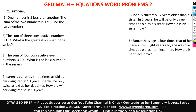Going to the questions now. Number one says: one number is five less than another. The sum of the two numbers is 171. Find the two numbers. Let's make the first number X. One number is equal to five less than another — let the other be Y. Five less than Y means Y minus five. When you see 'less than,' Y comes first, then you subtract five from Y.